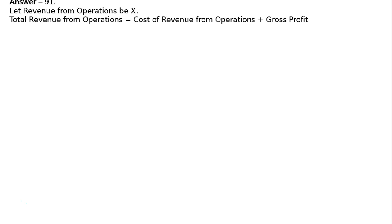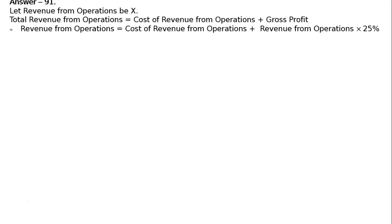Question 91: From the following information, calculate opening and closing trade receivables if trade receivables turnover ratio is 3 times. Let revenue from operations be X. Total revenue from operations equals cost of revenue from operations plus gross profit. Gross profit is 25% of revenue from operations. So X equals cost of revenue from operations plus X multiplied by 25 percent.